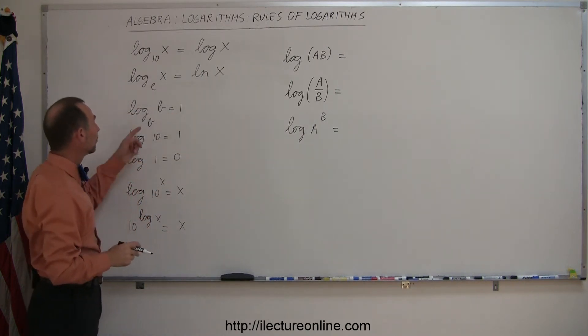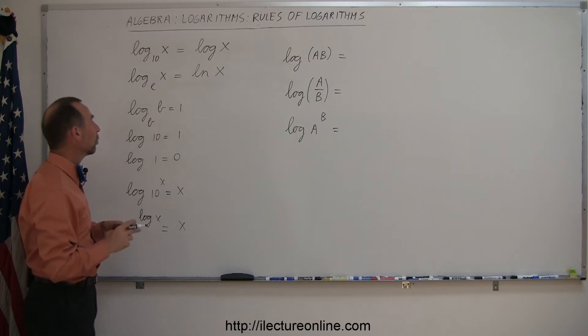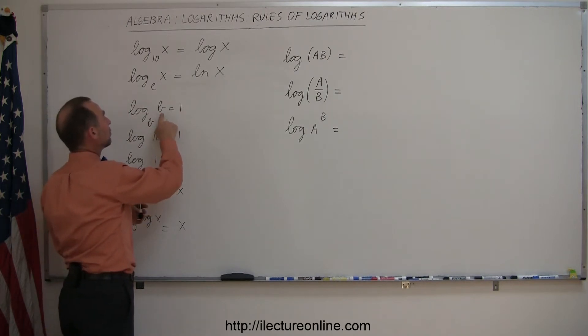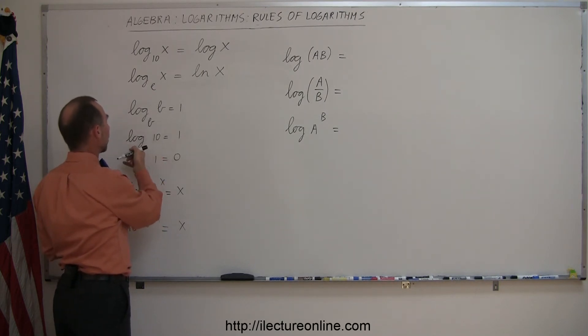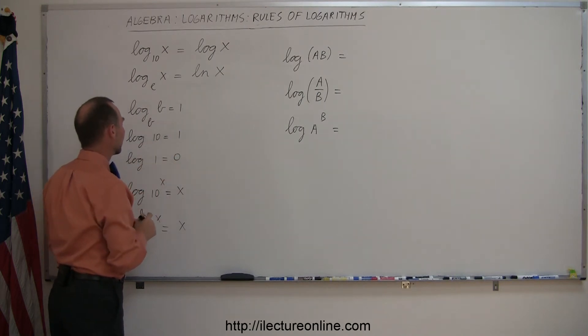Now, when you take the log of base b of b, that is always equal to 1, because b to the 1 power is, of course, equal to b. Now, that works for any log. So log base 10 of 10 is equal to 1, because the base and the number you're taking the log of is the same.